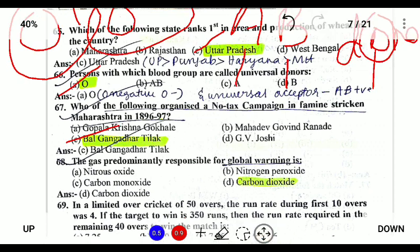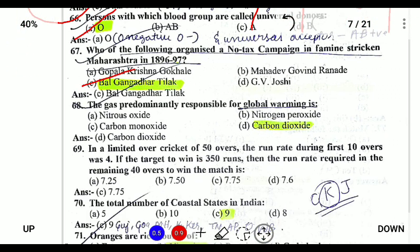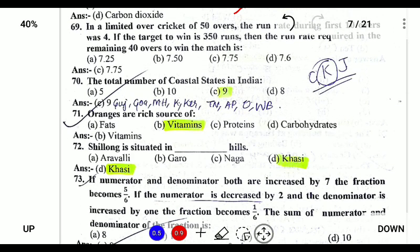The gas predominantly responsible for global warming is carbon dioxide, also known as the greenhouse effect. The number of coastal states is nine: Gujarat, Goa, Maharashtra, Kerala, Karnataka, Tamil Nadu, Andhra Pradesh, Orissa, and West Bengal.